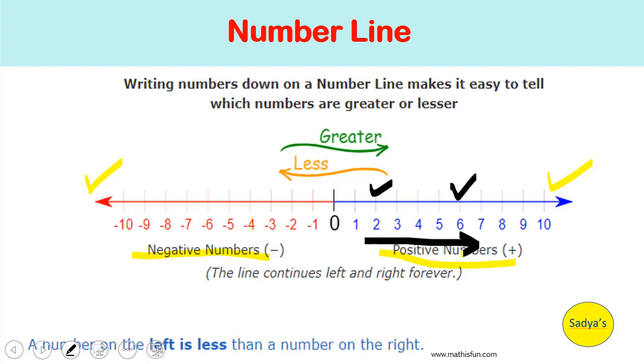Similarly, if we compare minus 6 and minus 2. Moving from left to right, minus 6 comes first. So minus 6 is a smaller number and minus 2 is a greater number. So a number on the left is less than a number on the right.